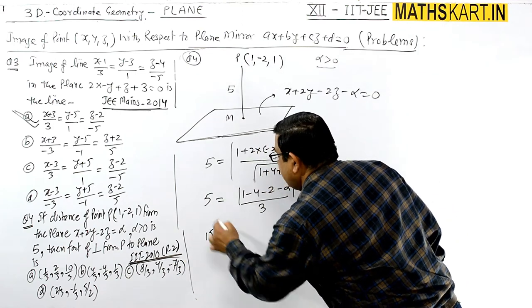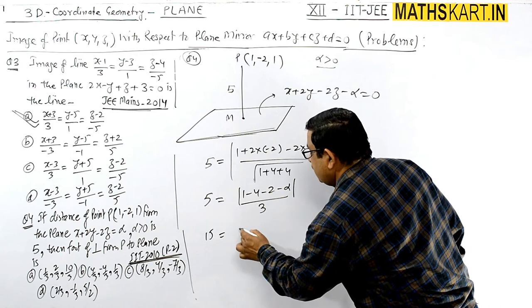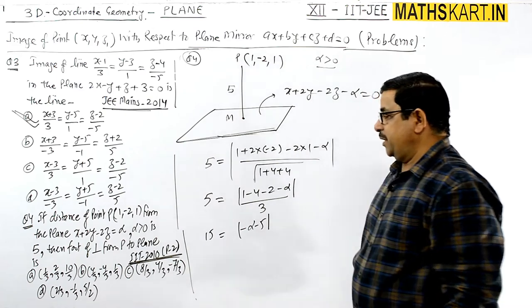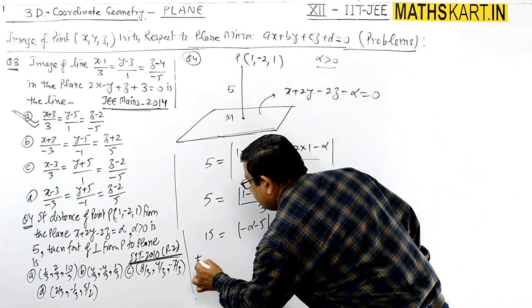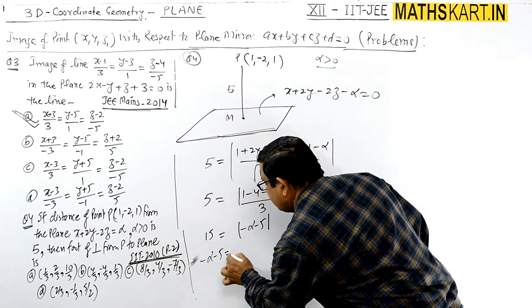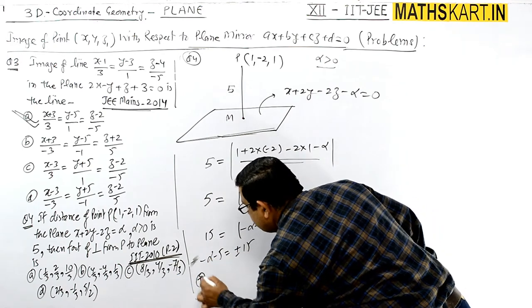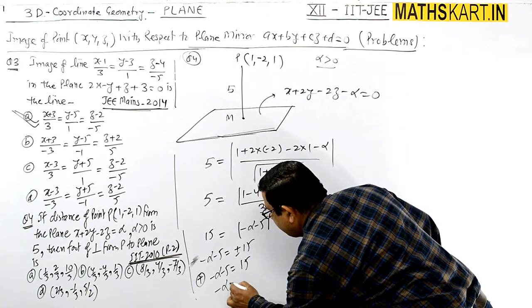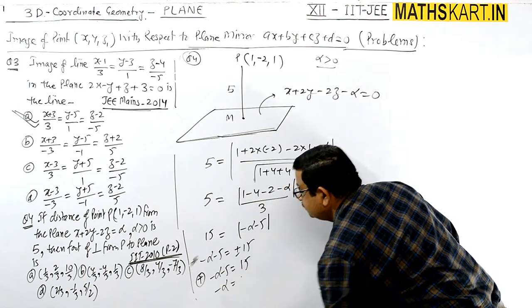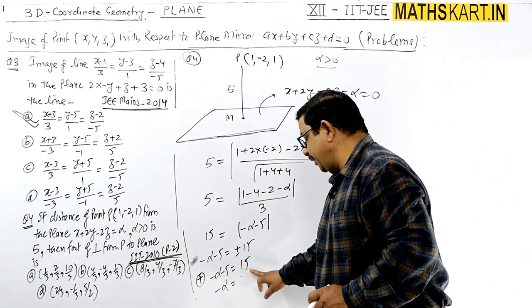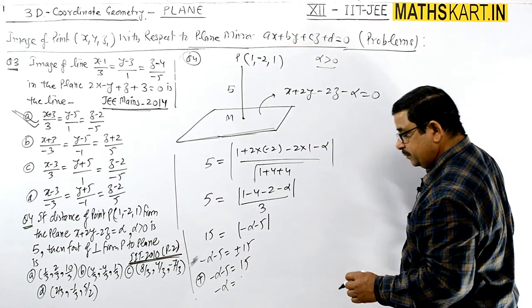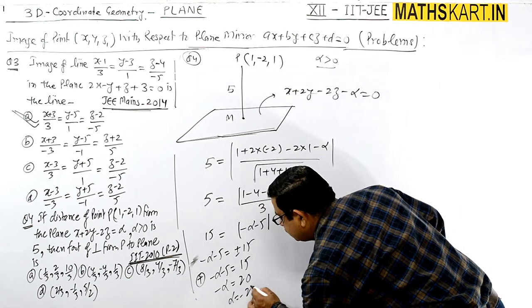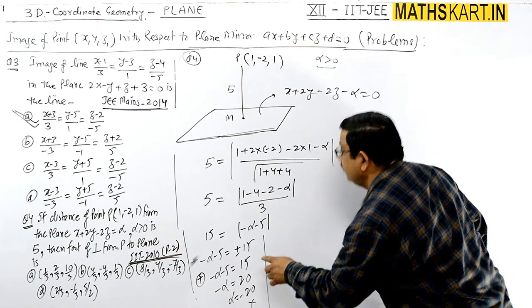Now taking plus-minus. So you can write -α - 5 = ±15. Taking positive: -α - 5 = 15. You get α = -20. By taking positive, -α = 20, α = -20. This won't work because positive value of α is required.